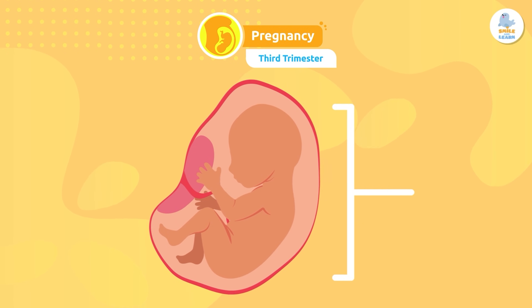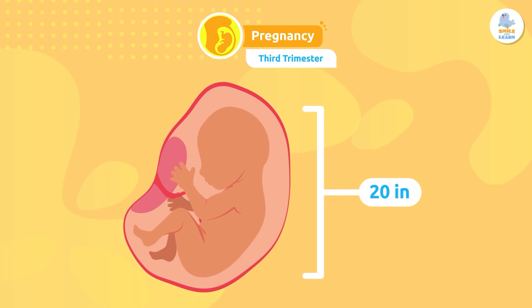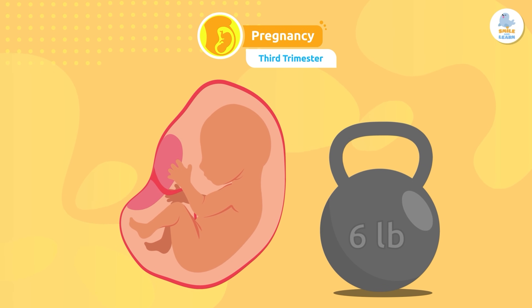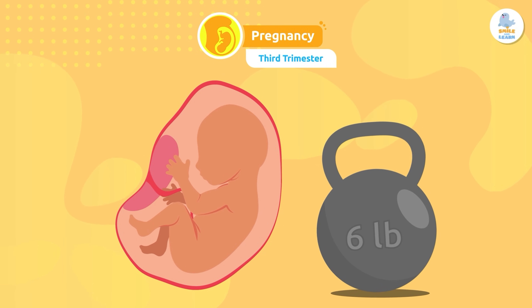Third trimester: in the last trimester, the fetus grows very quickly as it prepares for birth. It can be up to 20 inches long and weigh around six pounds.